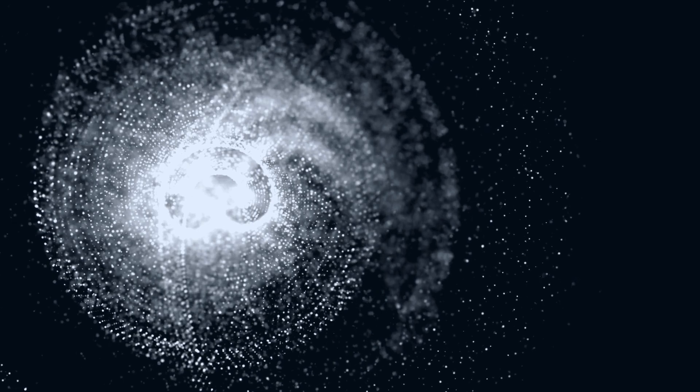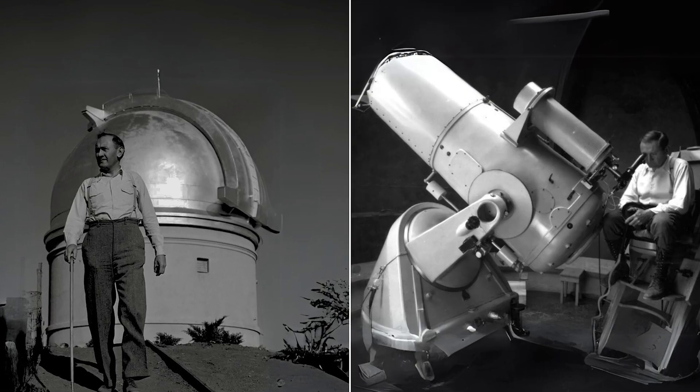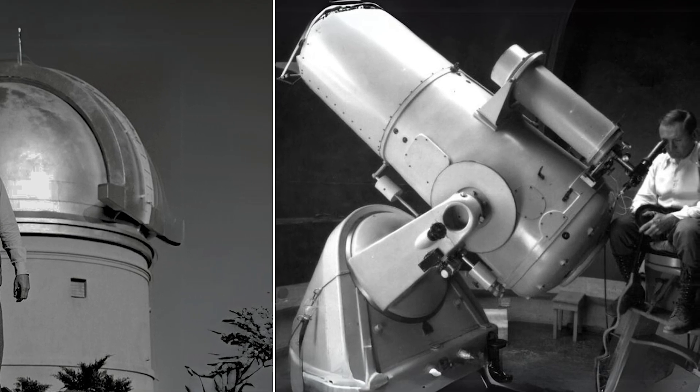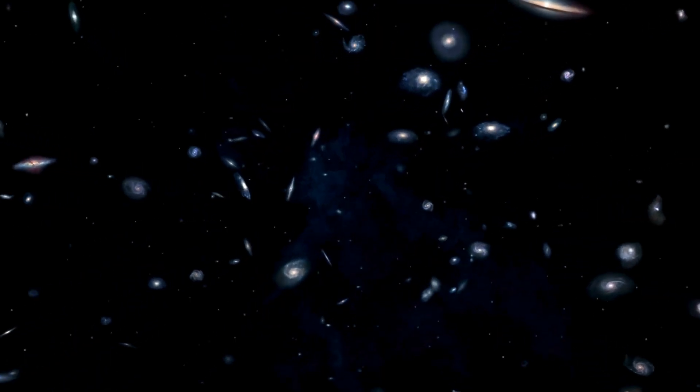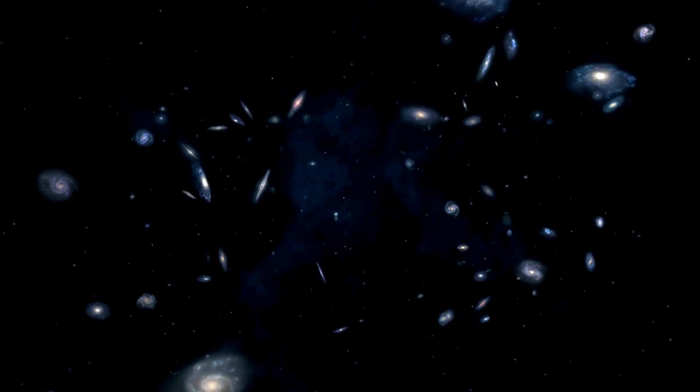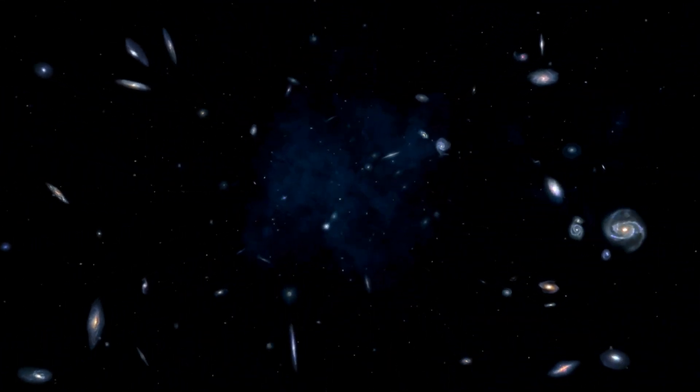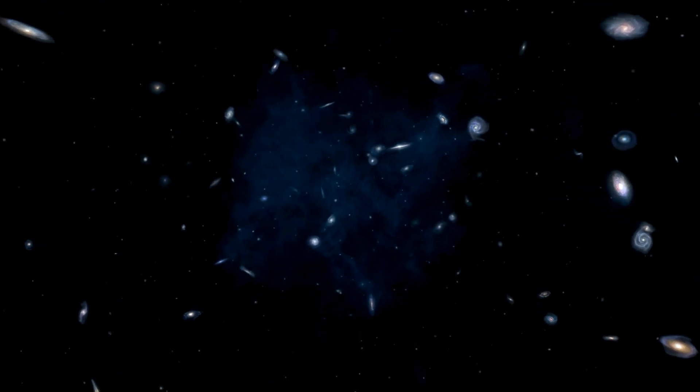Dark matter was first suggested back in the 1930s by a Swiss astronomer named Fritz Zwicky. He saw that when you add up all the stuff we can see in a group of galaxies, called a galaxy cluster, it's not enough to explain why the galaxies stick together. There had to be something else holding them with its gravity.